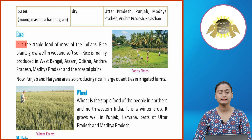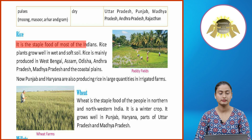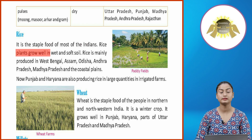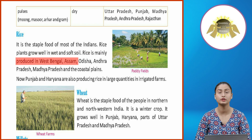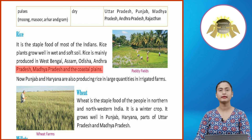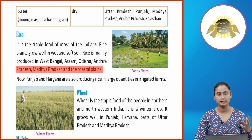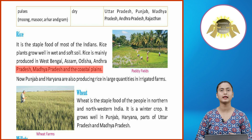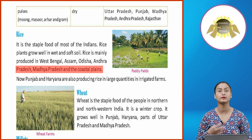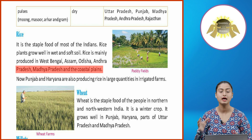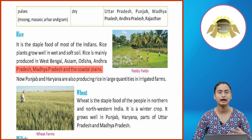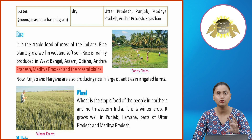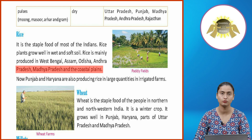Rice is the staple food of most Indians. Rice plants grow well in wet and soft soil. Rice is mainly produced in West Bengal, Assam, Odisha, Andhra Pradesh, Madhya Pradesh, and the coastal regions like Tamil Nadu and Andhra Pradesh.